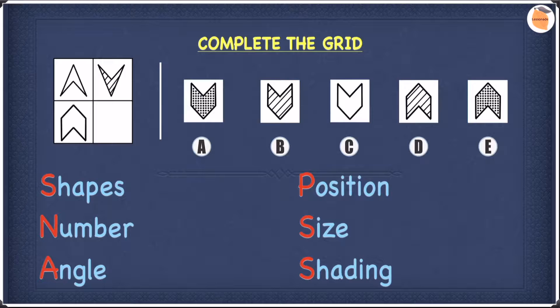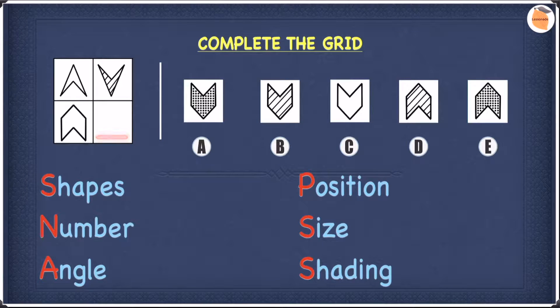In this type of question we have a larger square and inside this large square we have a smaller square which has been left blank. Our job is to find the shape that fits best in this square from the multiple choice.